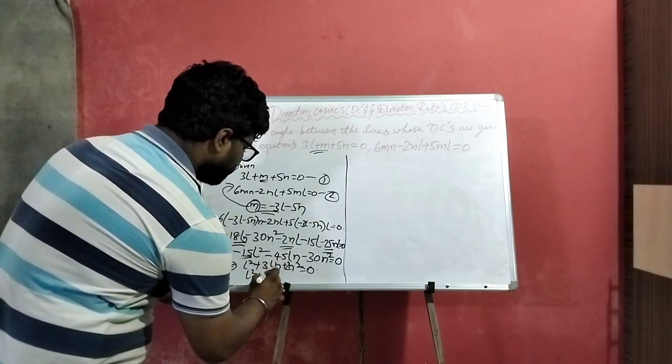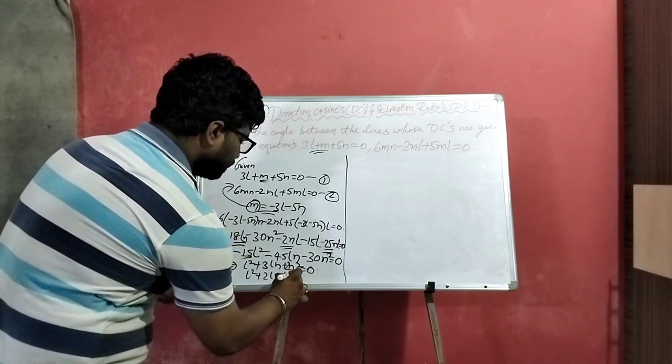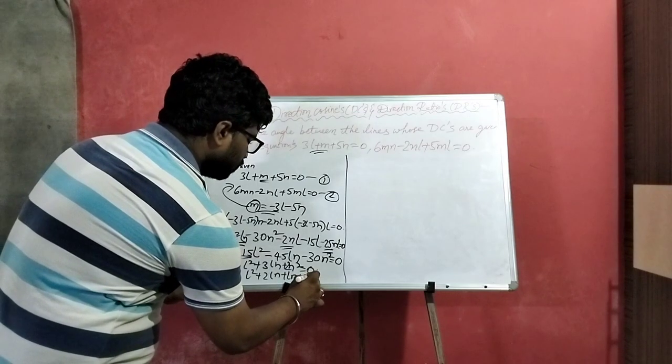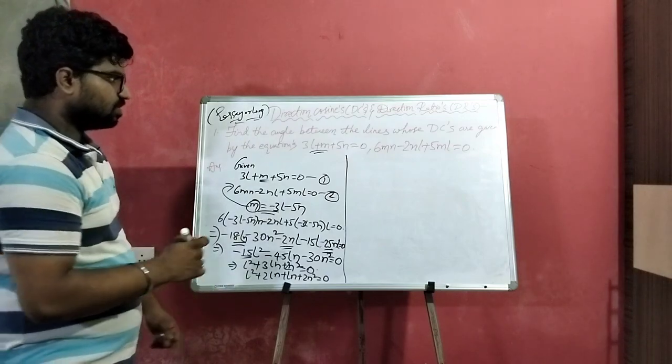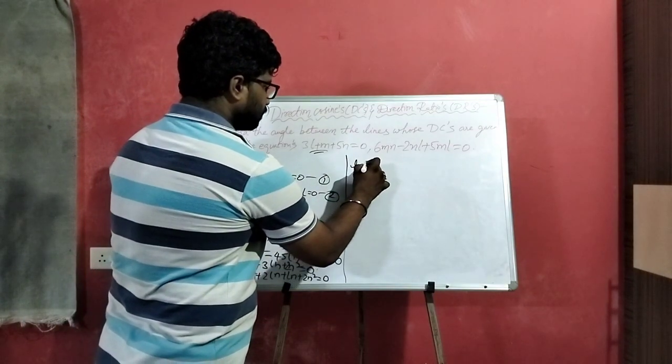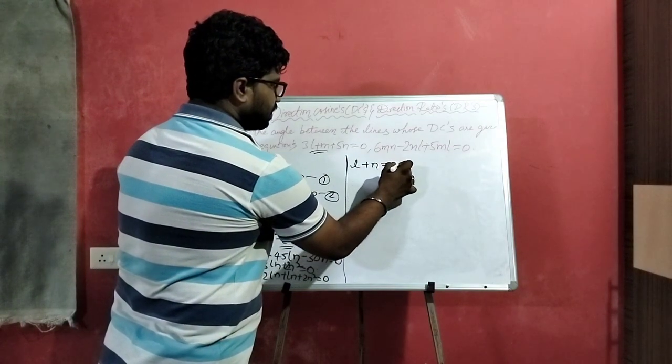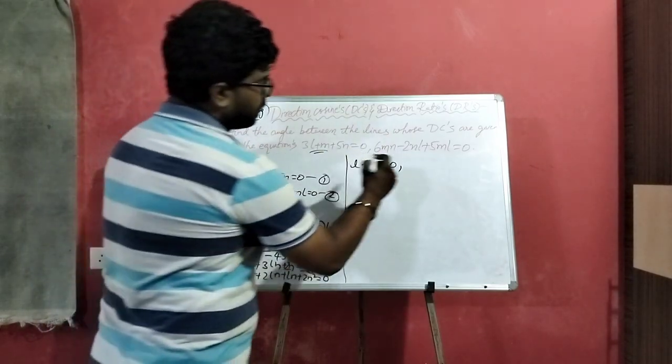L squared plus 3LN plus 2N squared equal to 0. Then factors: L squared plus 2LN plus LN plus 2N squared equal to 0.